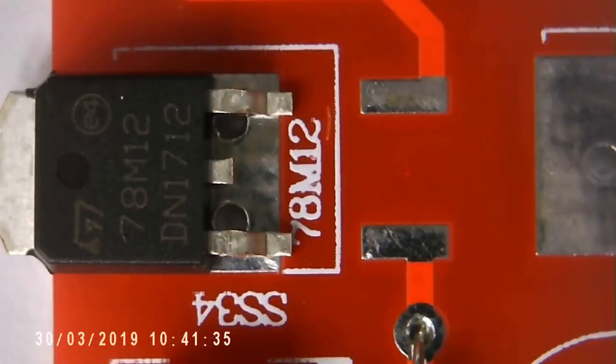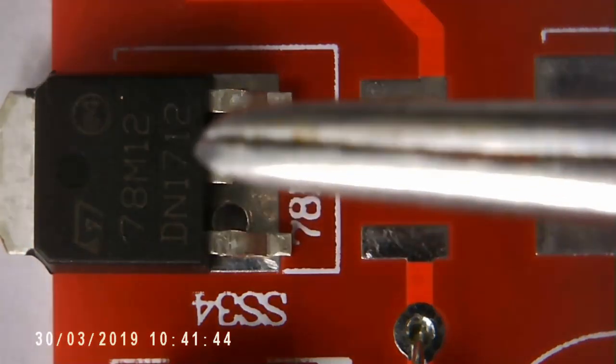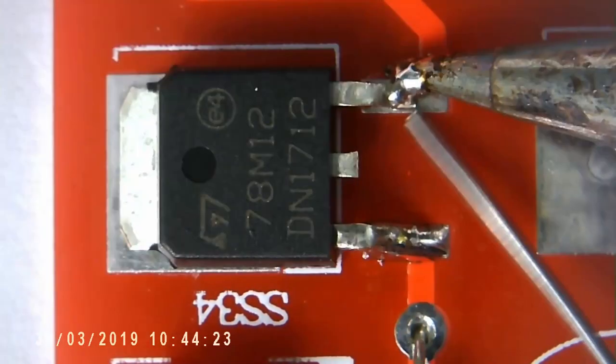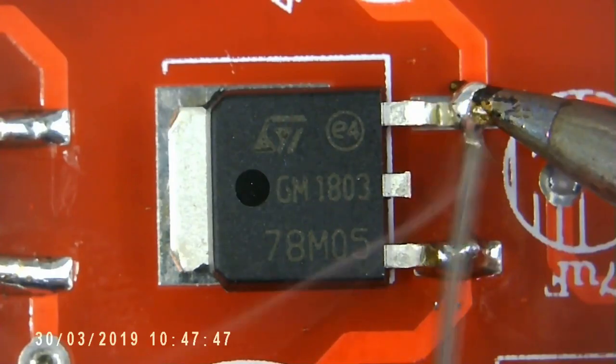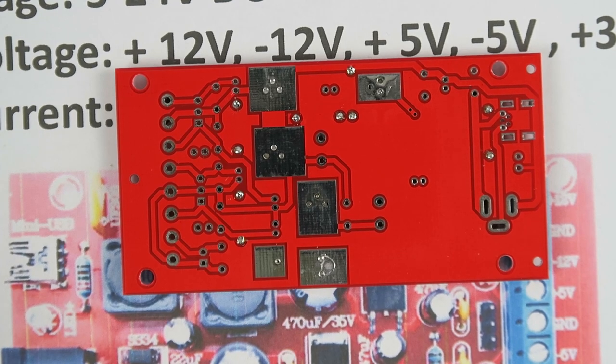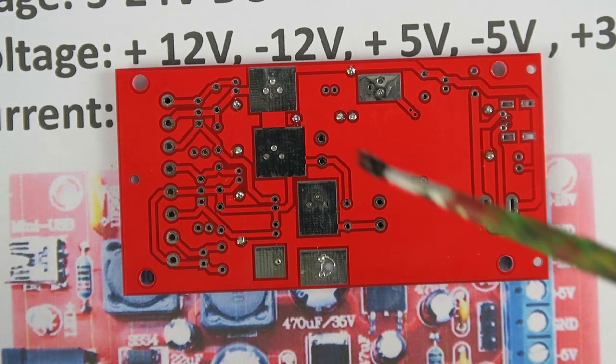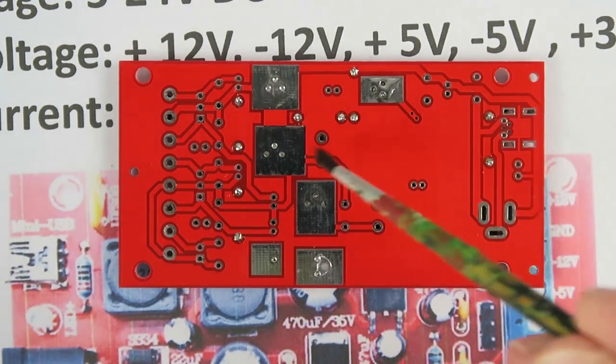A similar process now with the regulators. Take special care that you select the right one. The numbers are not very distinct so this is the 78M12. To complete this phase of the soldering I'm just going to flow some solder from the underside.